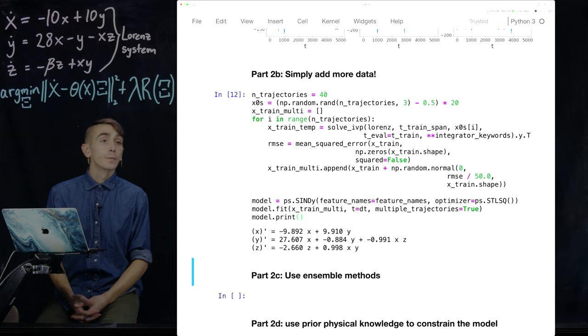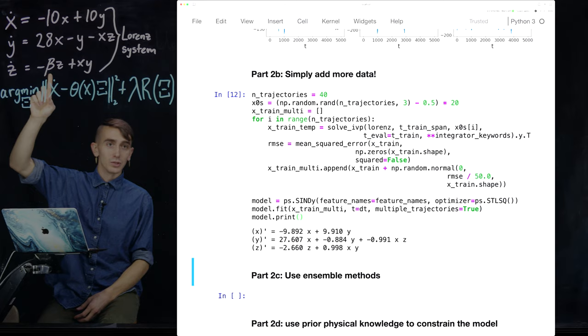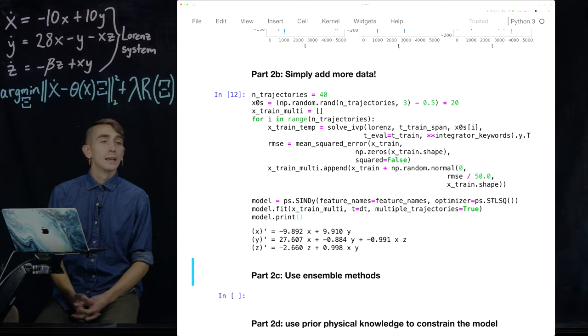And note, note here, I haven't actually defined beta before, but beta is usually 8 thirds. So 2.666. So this is pretty darn close. And you can check for yourself that this actually outperforms if you just use a single trajectory.